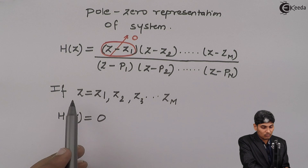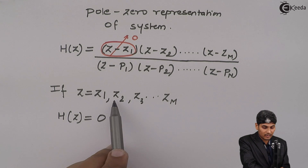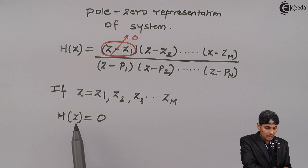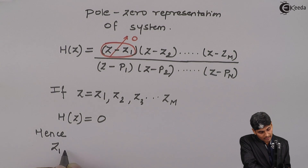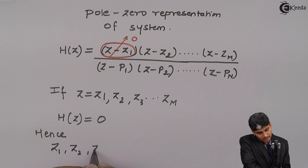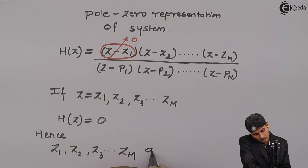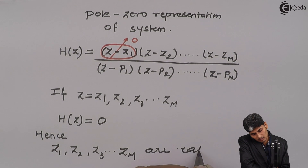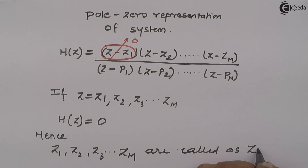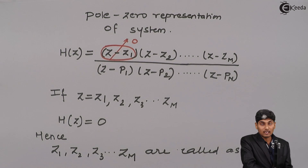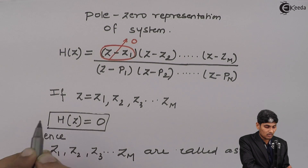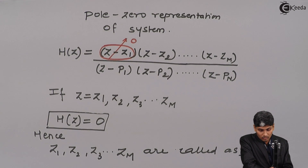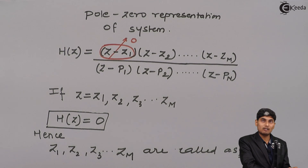If I put any value of z equal to z1, z2, z3, or zm, then H(z) will go to 0. Hence, z1, z2, z3, and zm are called the zeros of the system. They are called zeros because they take the transfer function to 0.